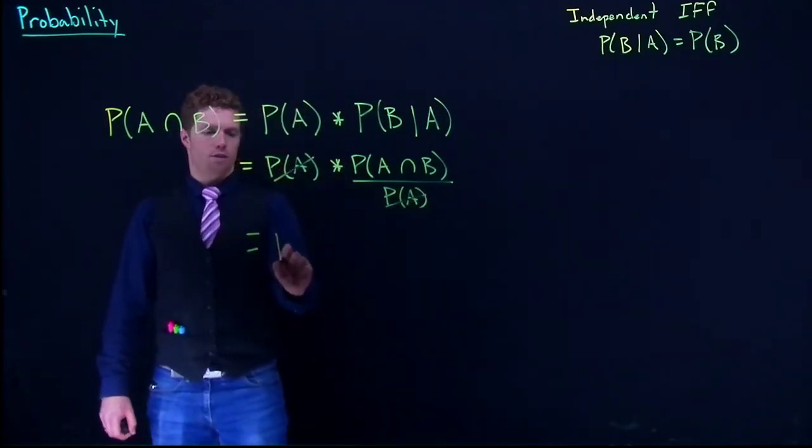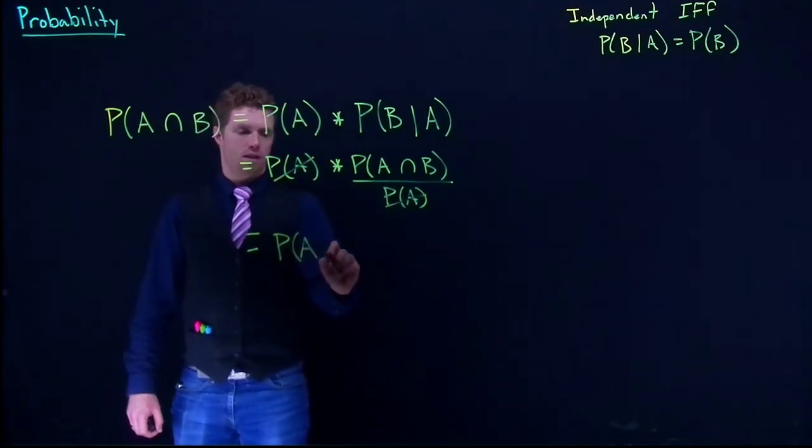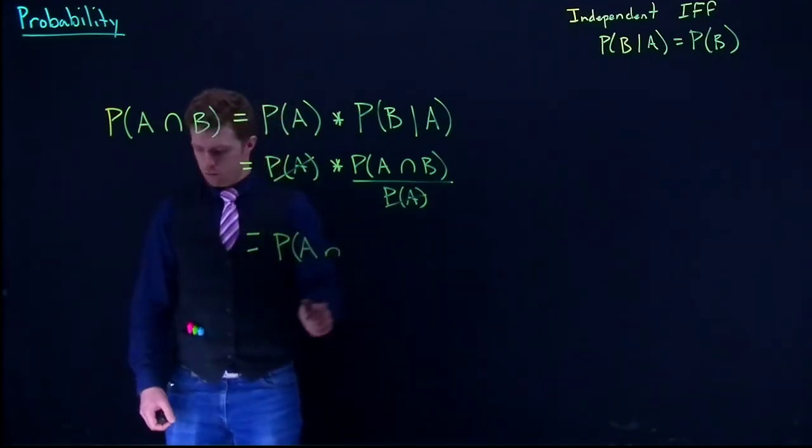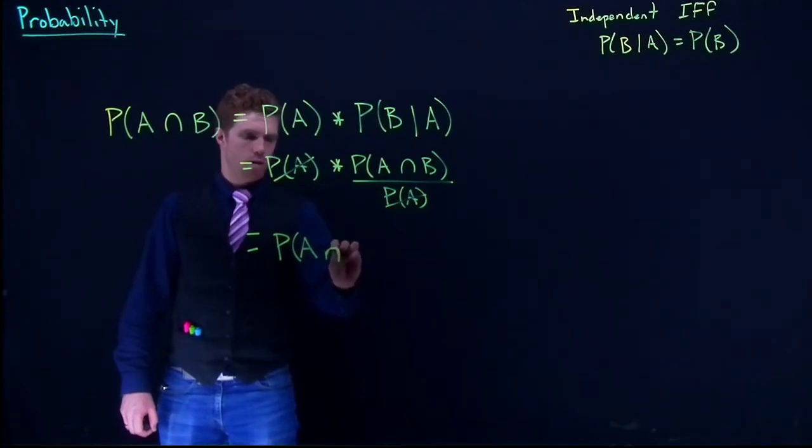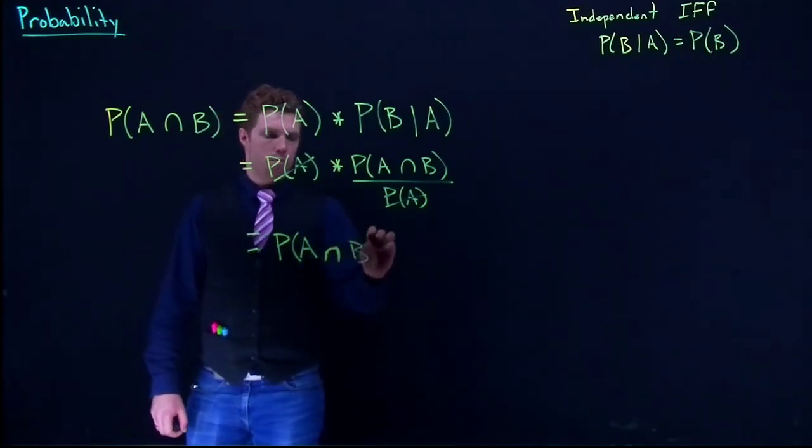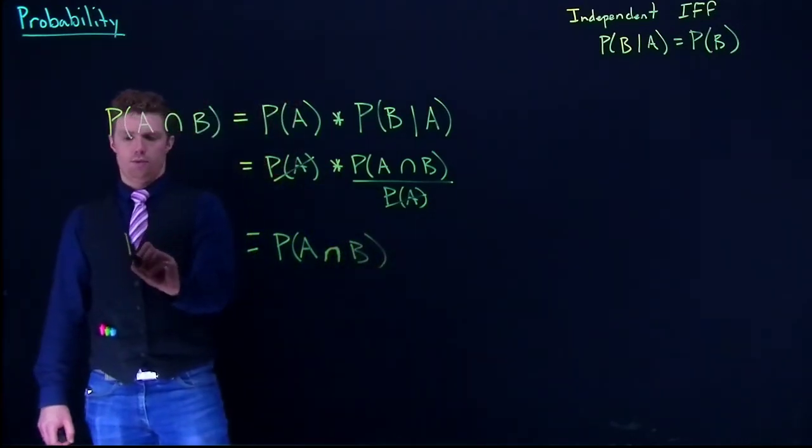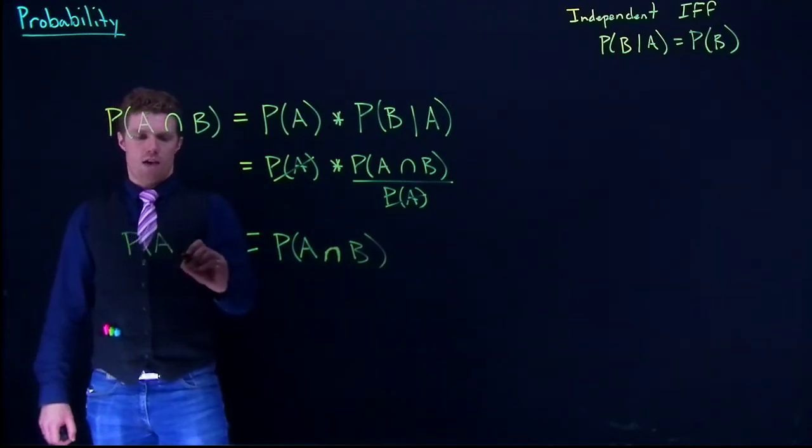out, and then we just have the probability of A intersect B is equal to the probability of A intersect B.